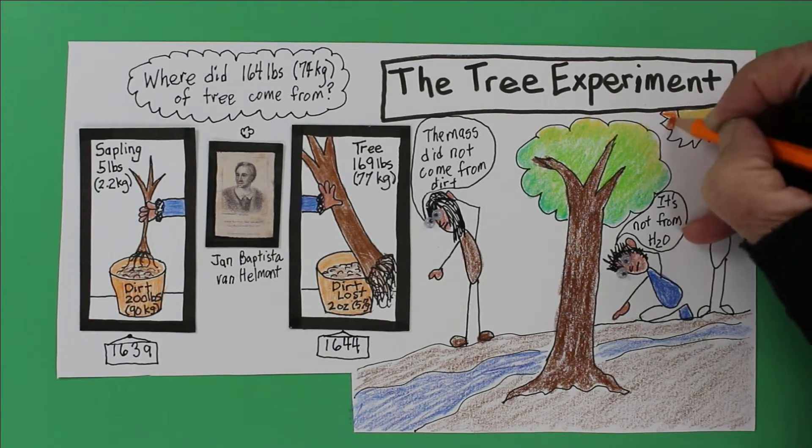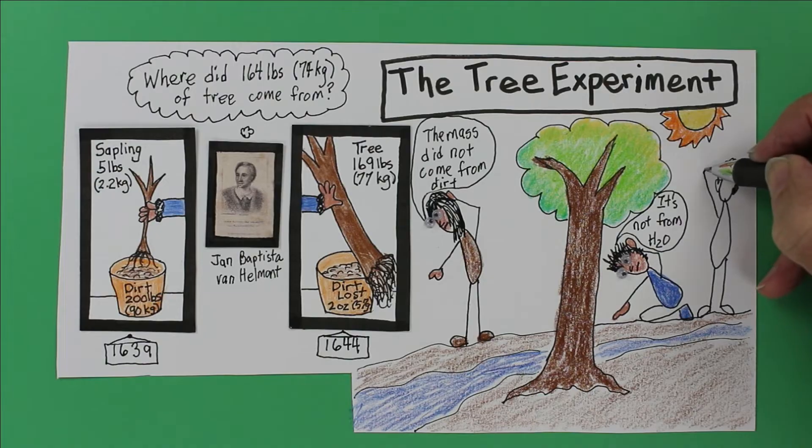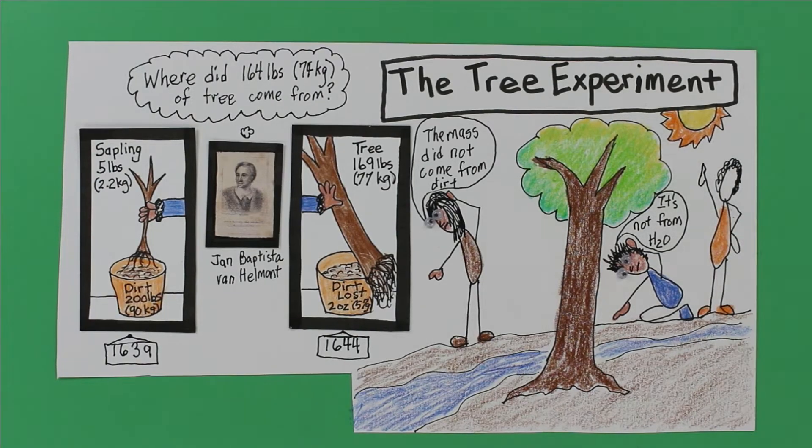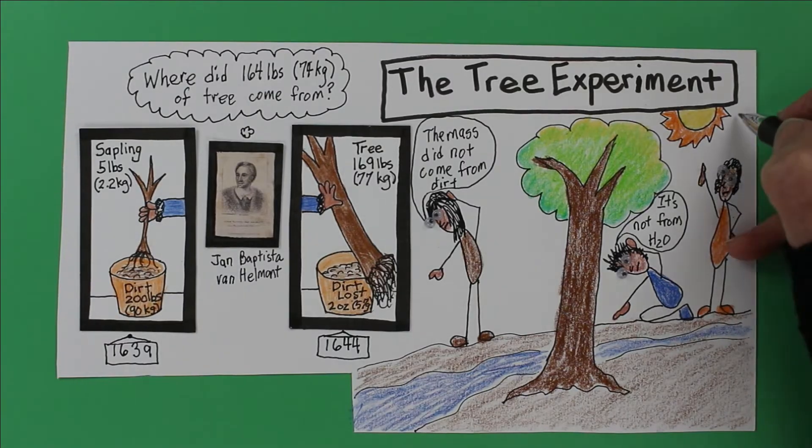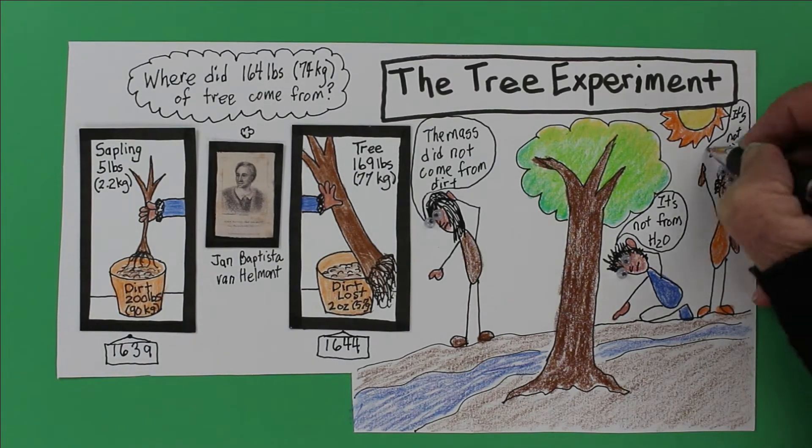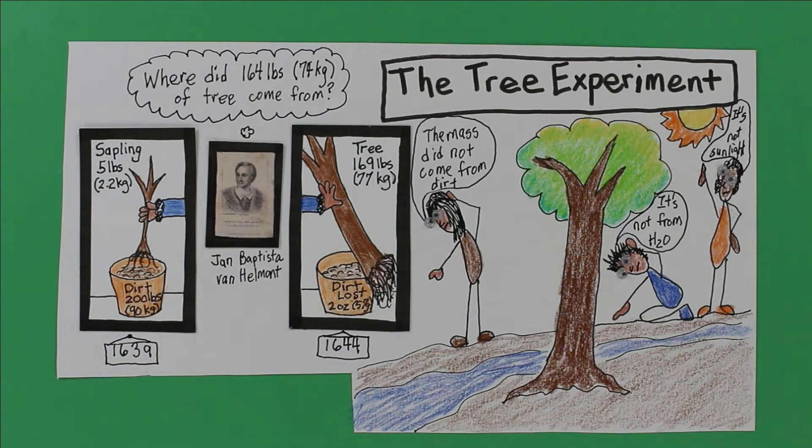could the 164 pounds have come from sunlight? Well, the sun's energy is held in the bonds of a tree's carbohydrates, fats, proteins, and DNA. But molecules are matter, not pure energy. So where did that mass come from?